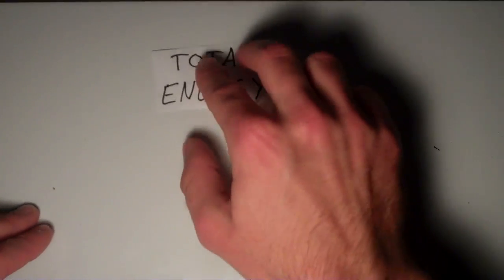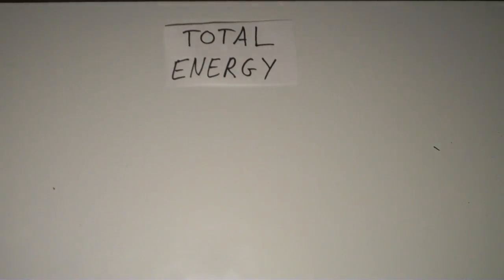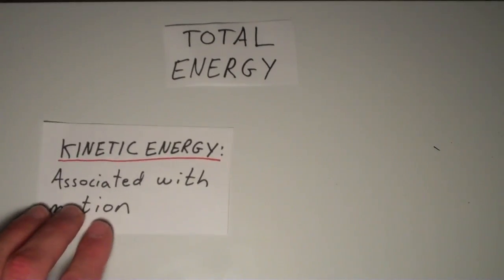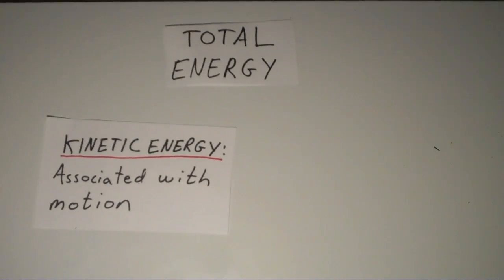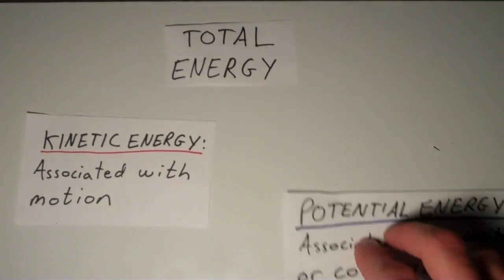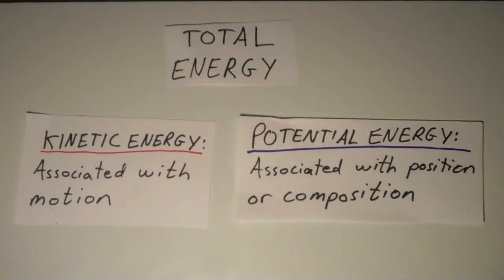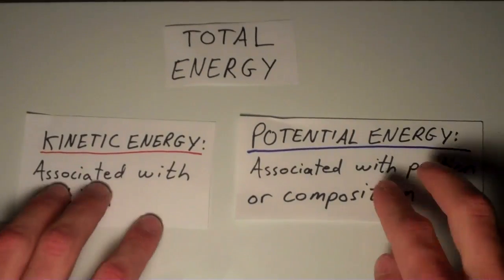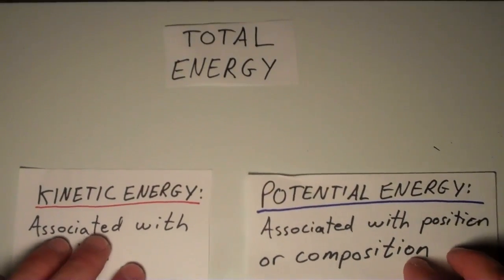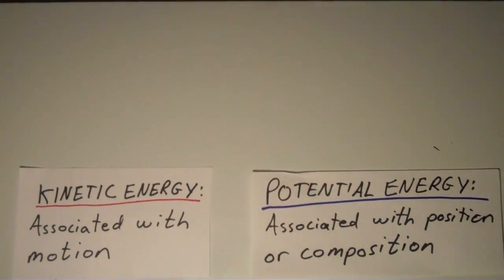Now, the total energy that an object has at any given time is the sum of its kinetic energy, which is the energy associated with motion, and its potential energy, which is the energy associated with position or composition. So, in the following diagram, I'm going to illustrate kinetic and potential energy.